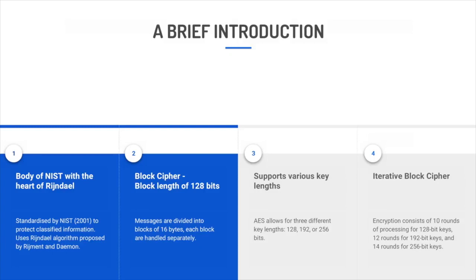AES is part of a family known as block ciphers, which operates on a block size of 128 bits. Since AES is symmetric, it uses the same key for both encryption as well as decryption. However, AES allows for three different key lengths: 128, 192, or 256 bits. Like DES, AES is an iterated block cipher in which plaintext is subjected to multiple rounds of processing.